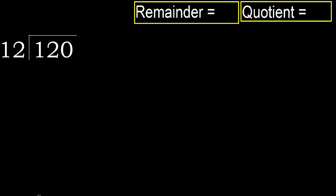120 divided by 12. 1 is less, therefore next. 12 is not less, therefore with 12. 12 multiplied by which number is nearest to 12 but not greater?